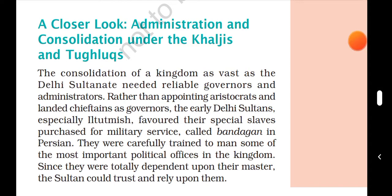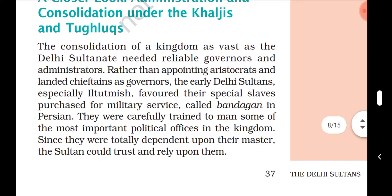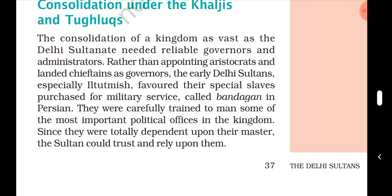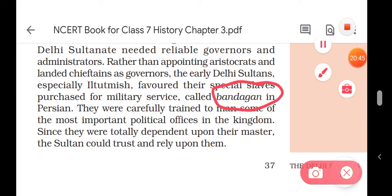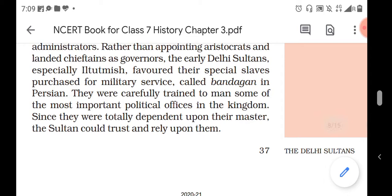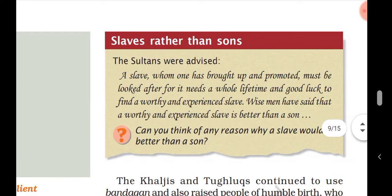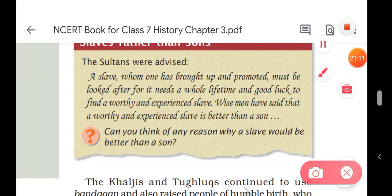Looking at the administration, the consolidation under the Khaljis and Tughlaqs required reliable governors and administrators. Rather than appointing aristocrats and landed chiefs as governors, the early Delhi Sultans favored their special slaves purchased for military service, called 'bandagan' in Persian. Bandagan were carefully trained to man some of the most important political offices in the kingdom. Since they were totally dependent upon their master, the Sultan could trust and rely upon them.